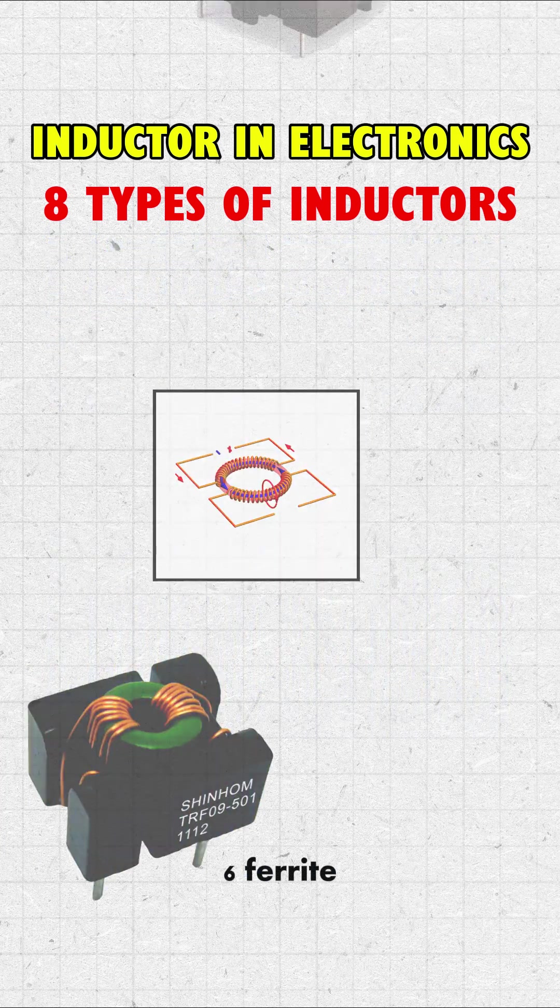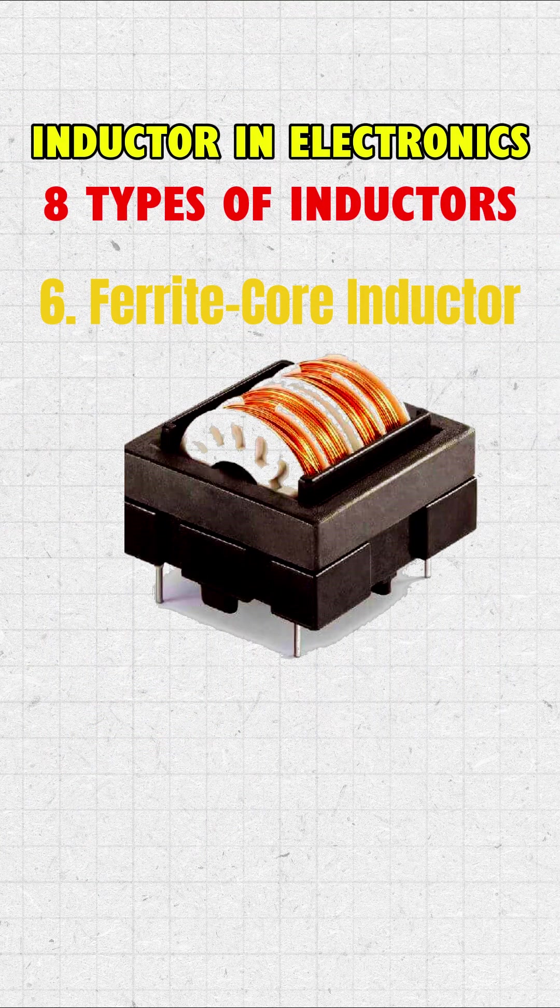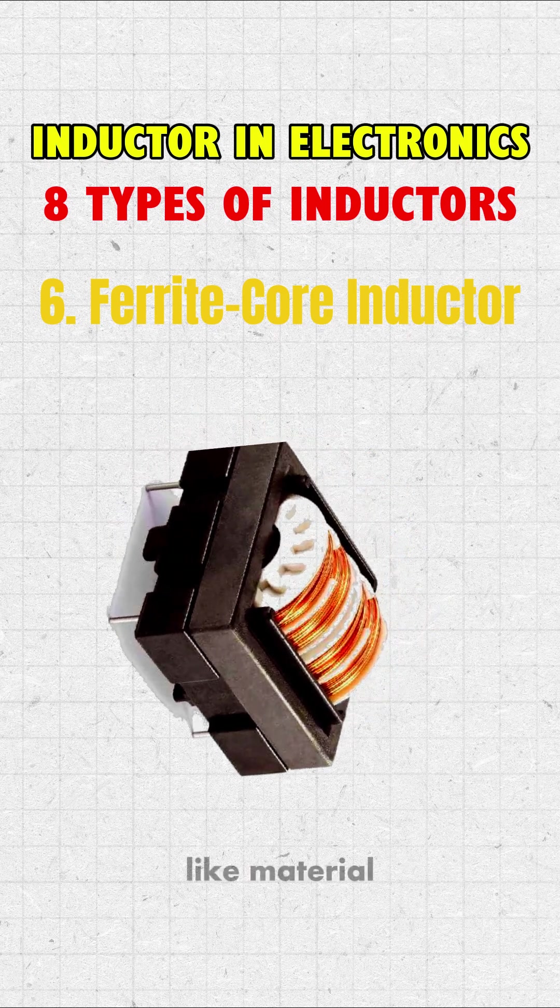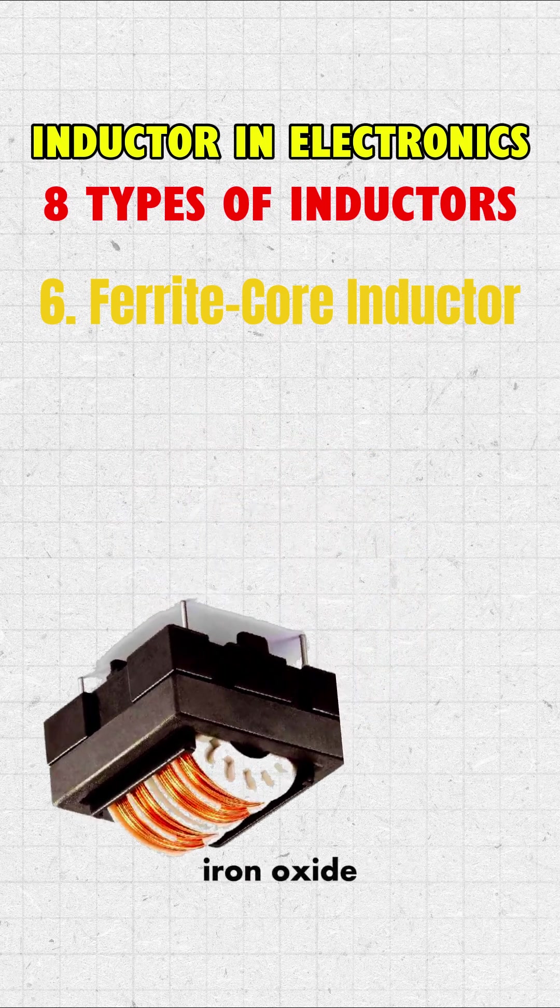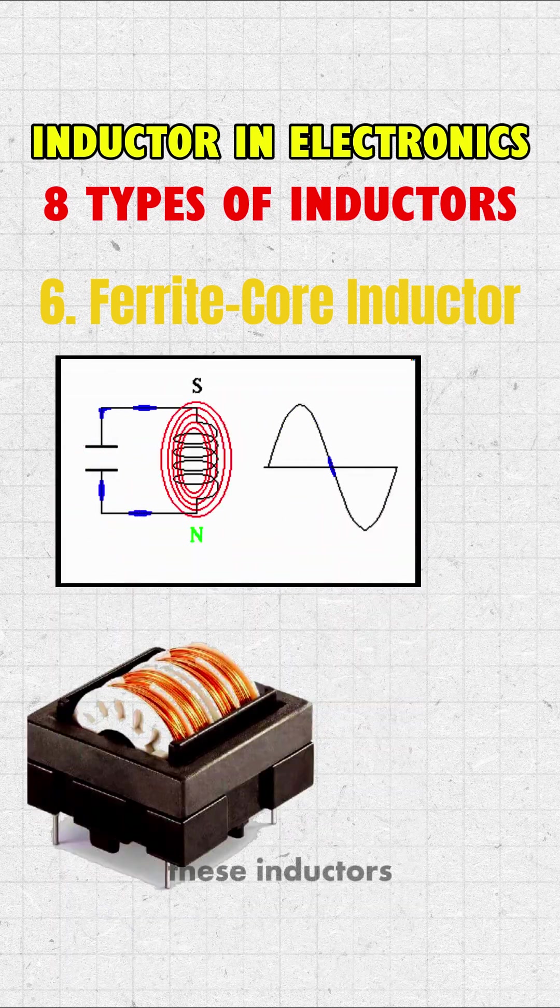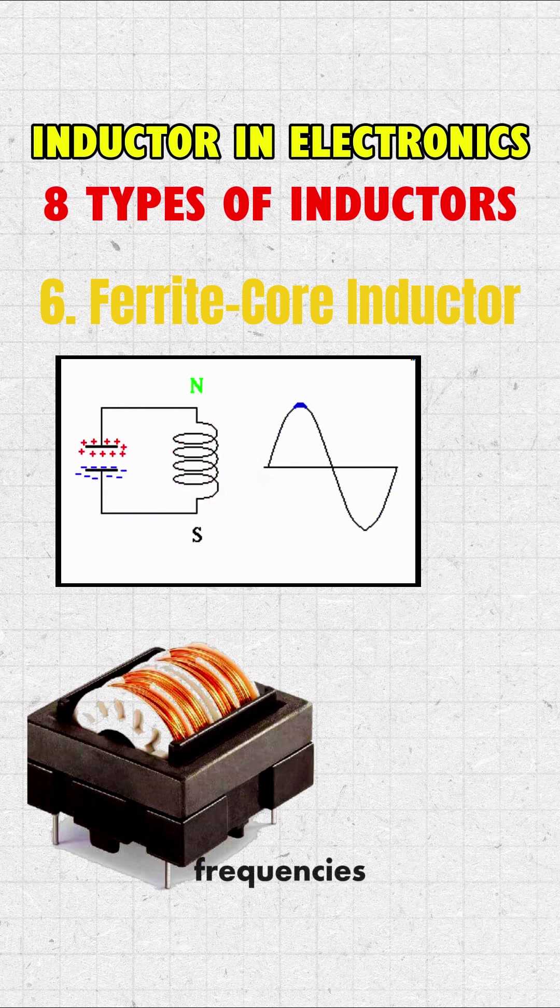6. Ferrite core inductor. Ferrite core inductors use a ceramic-like material made of iron oxide mixed with other elements. These inductors work well at high frequencies and help in noise filtering. You will find them in TV circuits, radio receivers, and power electronic circuits.